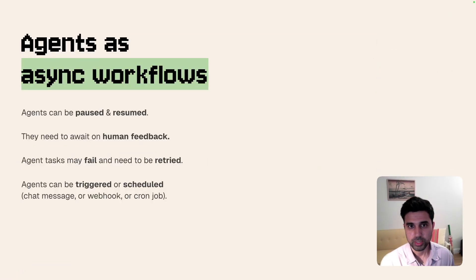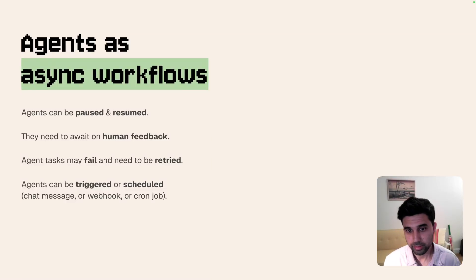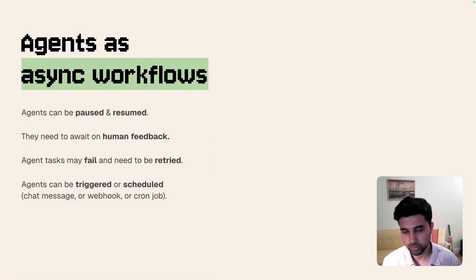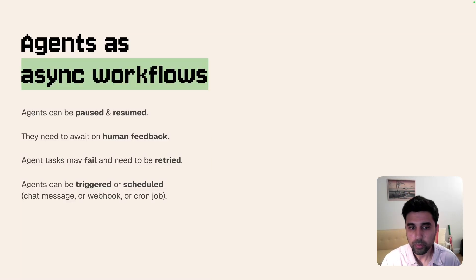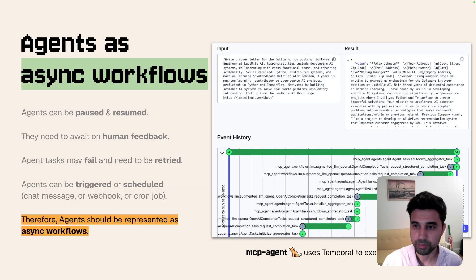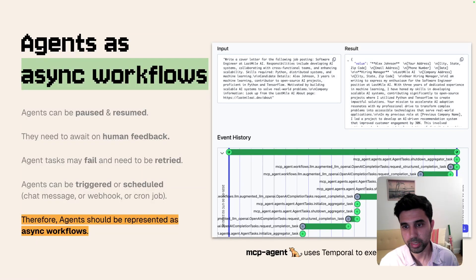I've talked about agents as async workflows. What I mean is that agents can be paused and resumed, they need to await human feedback in some cases, they may fail and need to be retried, and they could be triggered or scheduled — not just a chat application, but a webhook or a cron job that triggers an agent daily or weekly. The right way to model all of this is as asynchronous workflows, which is what we do in MCP Agent, using Temporal as the durable execution backend for agent orchestration.